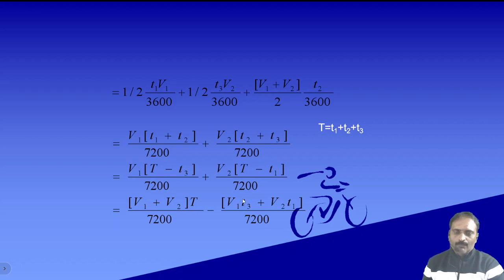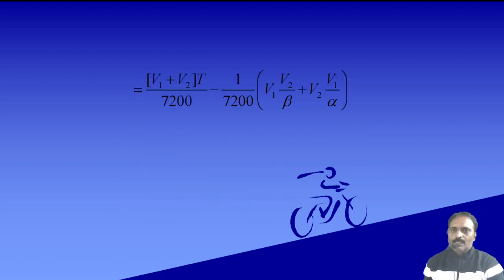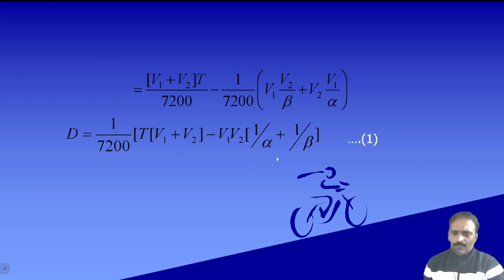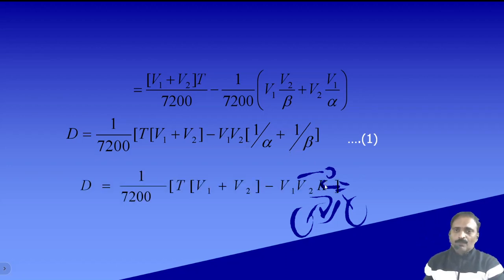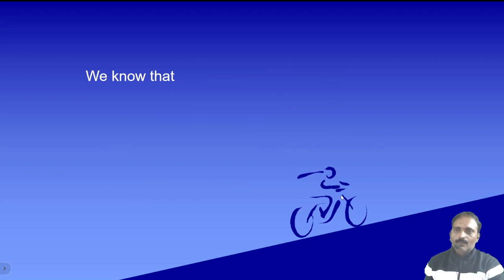Taking capital T as common we get (v1 + v2) times T / 7200, minus (v1·t3 + v2·t1) / 7200. Substituting t3 = v2/beta and t1 = v1/alpha, and factoring out v1·v2, we arrive at Equation 1: D = (1/7200) × [T(v1 + v2) − v1·v2·(1/alpha + 1/beta)], which can be written as D = (T(v1+v2) − K·v1·v2) / 7200.